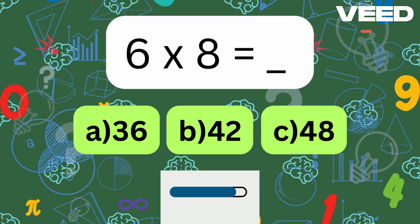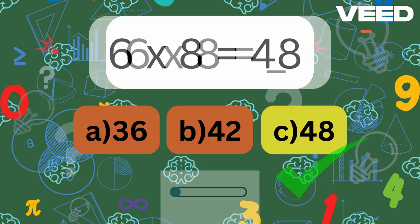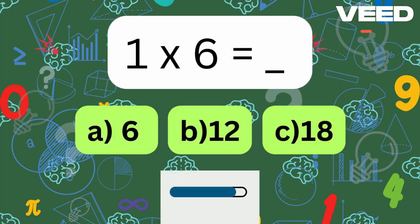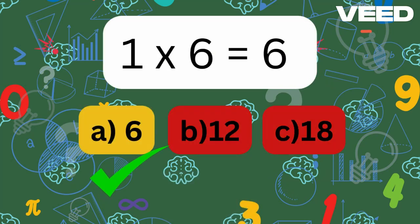6 times 8 is? 6 times 8 is 48. 1 times 6 is? 1 times 6 is 6.